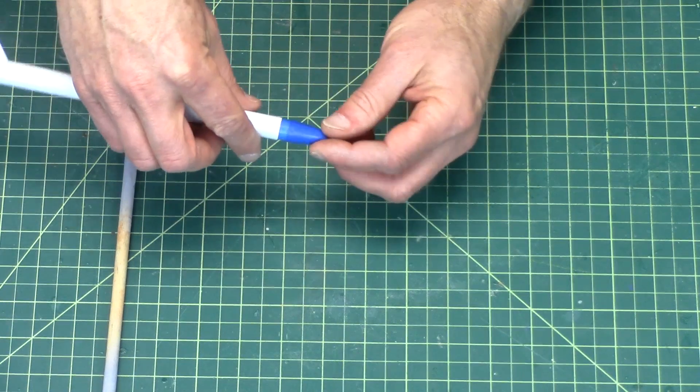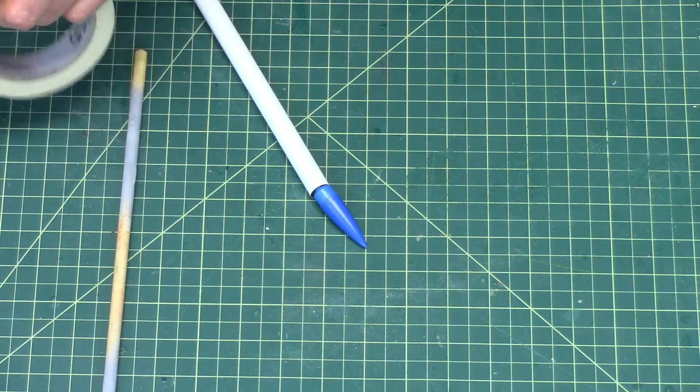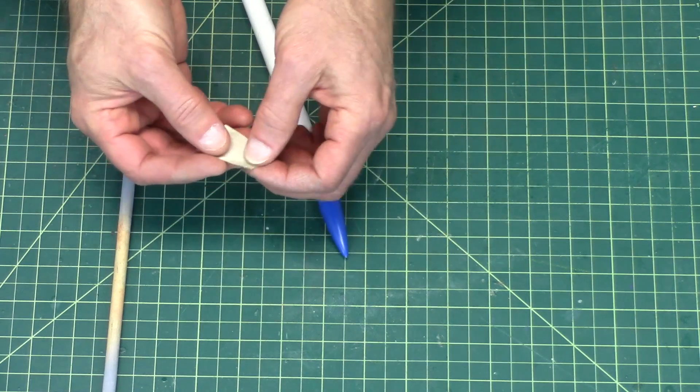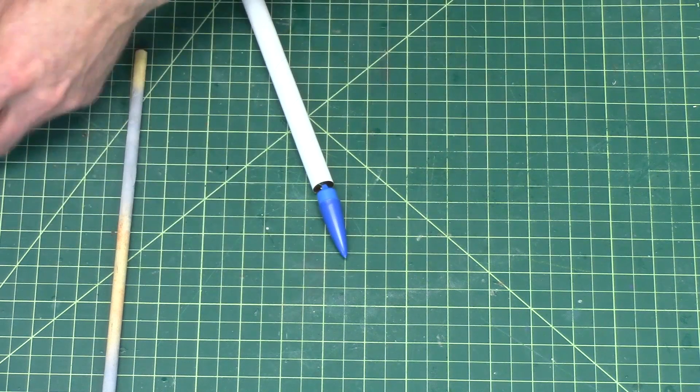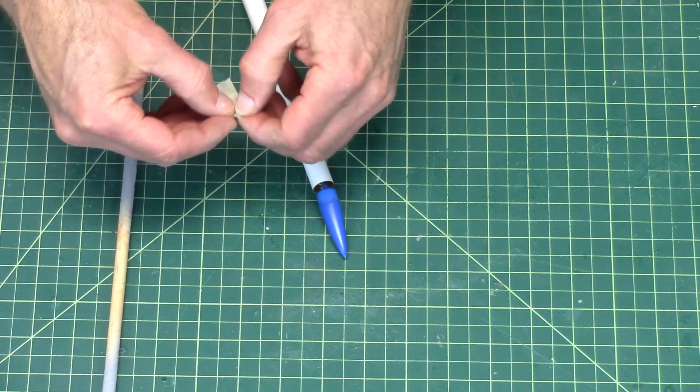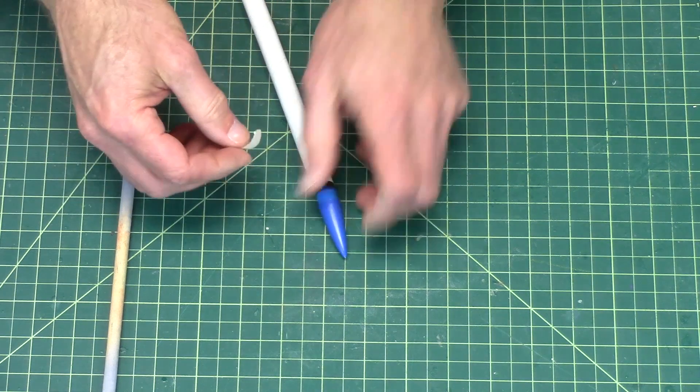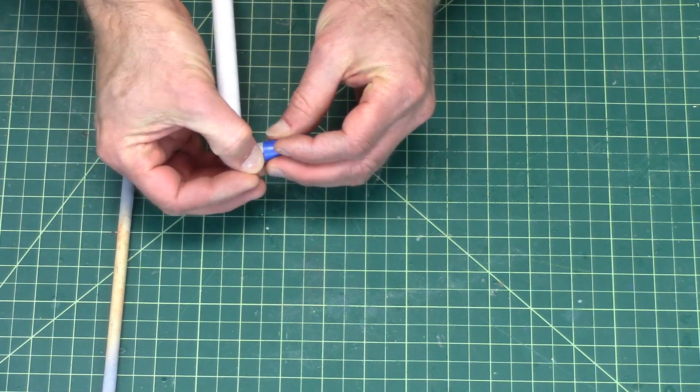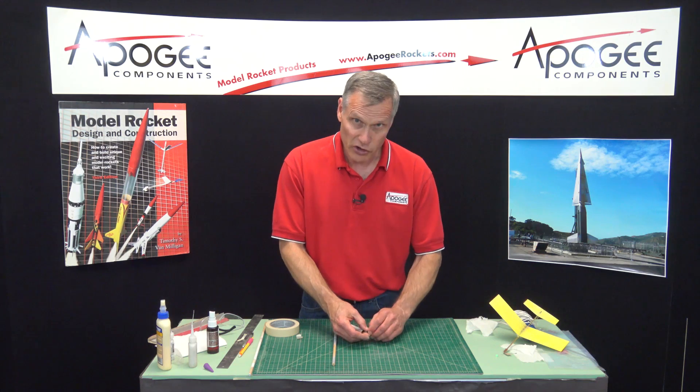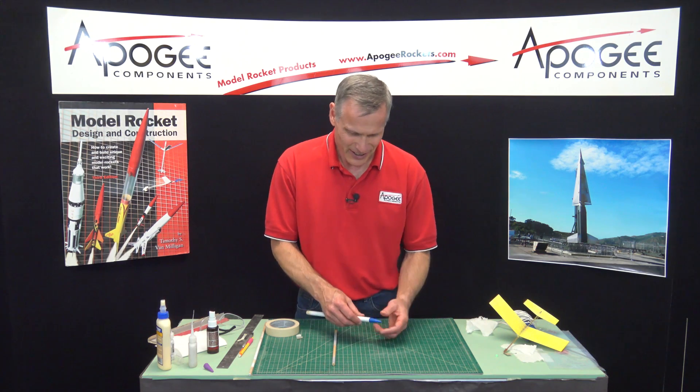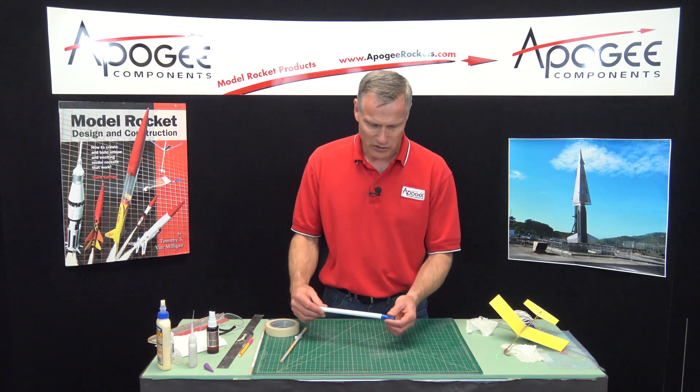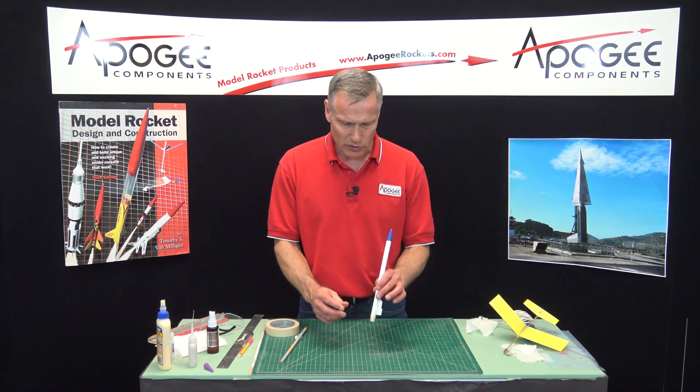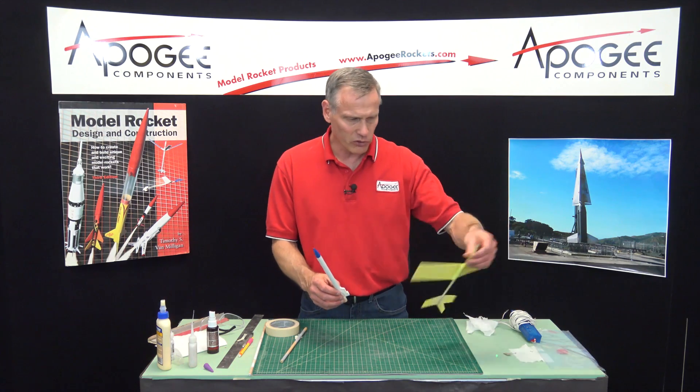Now you can see that this nosecone is really loose so I'm going to take another piece of tape and I need to cut it about the width of the shoulder that's sticking out. One wrap around the perimeter should do it. Now it's much tighter, it's still fairly loose, but I want it to come off and so this is ready to go.